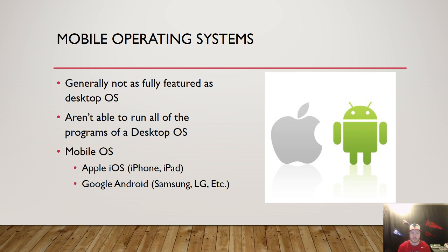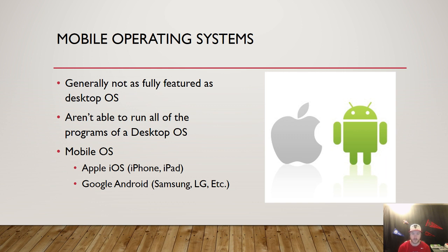As far as the mobile operating system market goes, there are really two large competitors. The first is Apple iOS, which runs on iPhones and iPads — and pretty much if you're running iOS, it's going to be an Apple product. The second is Google Android, which runs on many different types of phones: Samsung, LG, and even the Google Pixel. All of those types of phones run the Android operating system.